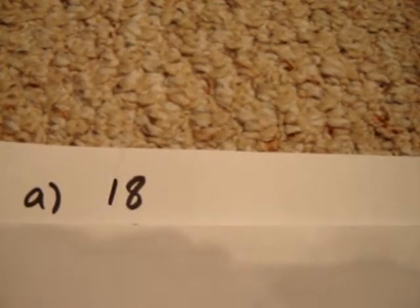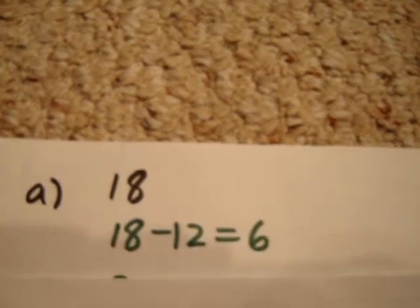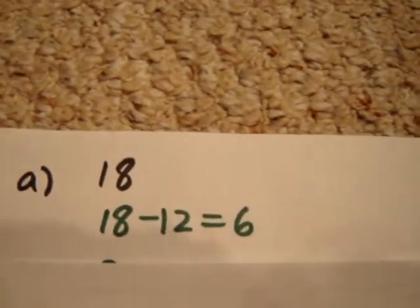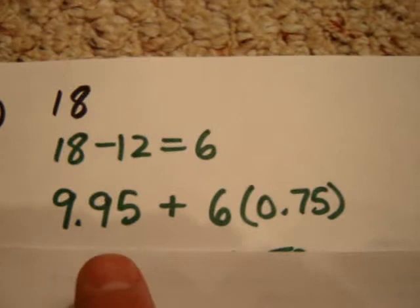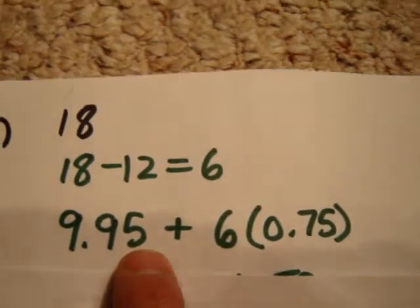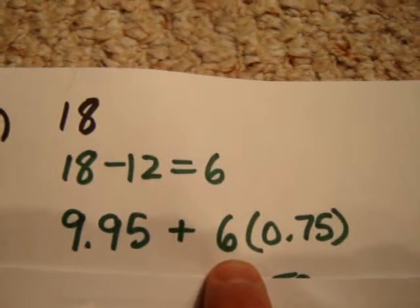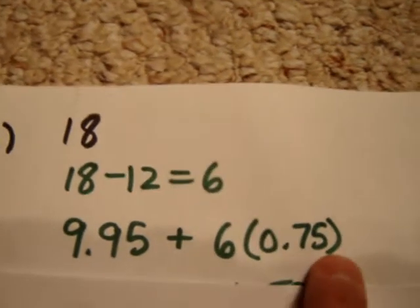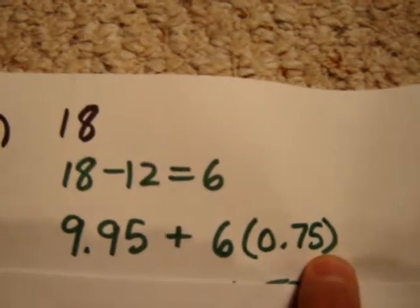Each of those 6 transactions will be $0.75. So 18 minus 12 is 6. So we see that she gets $9.95 for the first 12 transactions, and then she gets charged 6 times $0.75, because she made 6 transactions above 12.